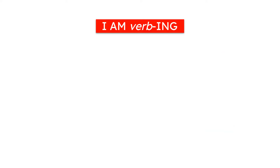First we have to take into consideration this structure in English: I am plus verb plus the ending -ing. For example, I am working, I am studying, and of course with the other persons too, like you are studying, he is working, and so on.